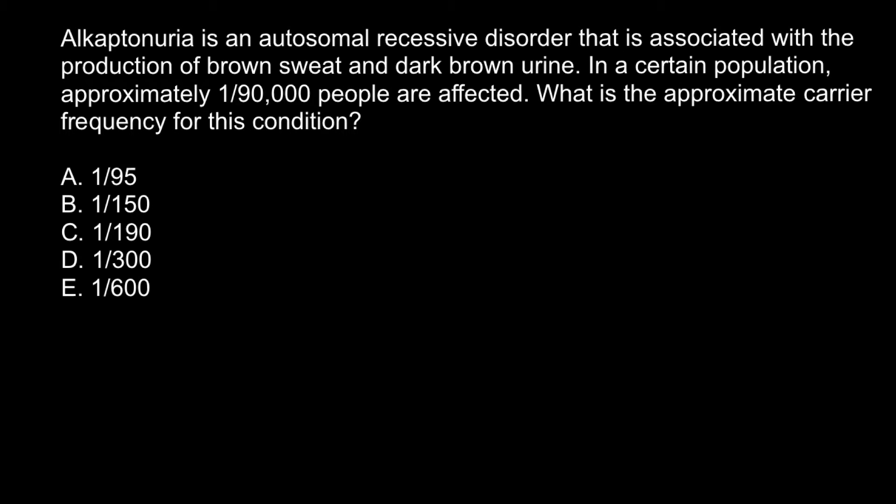Hello and welcome to Nikolai's genetics lessons. Today's problem is: Alkaptonuria is an autosomal recessive disorder that is associated with the production of brown sweat and dark brown urine. In a certain population, approximately one out of 90,000 people are affected. What is the approximate carrier frequency for this condition?